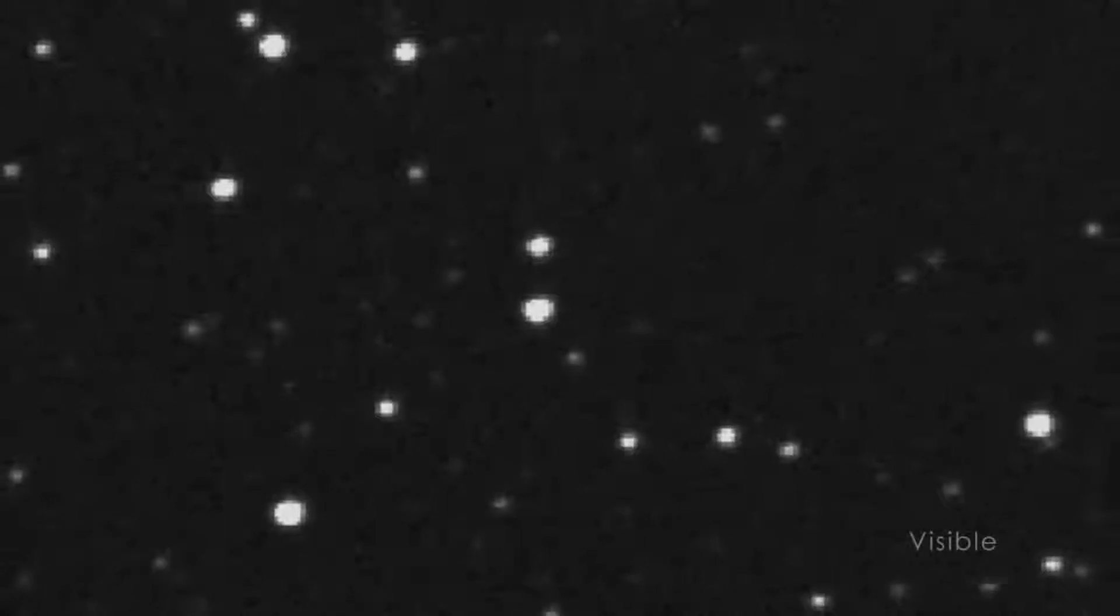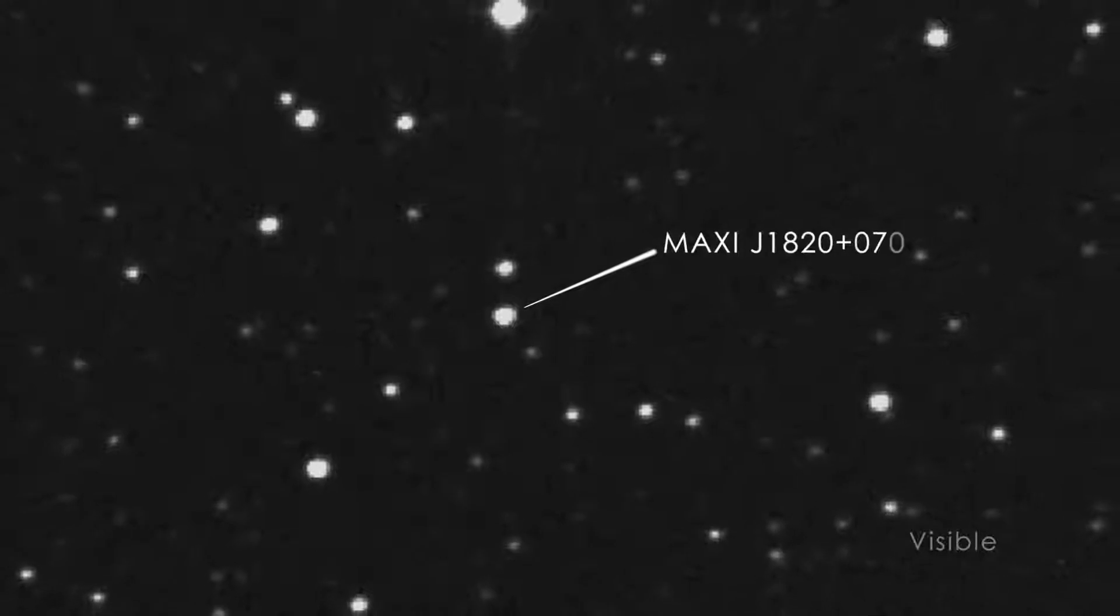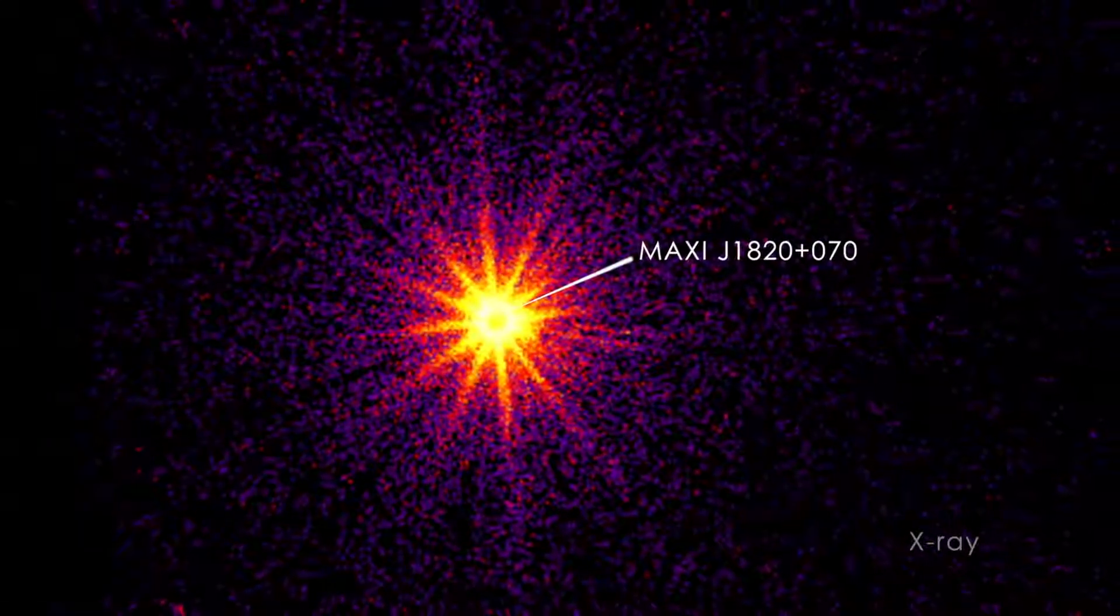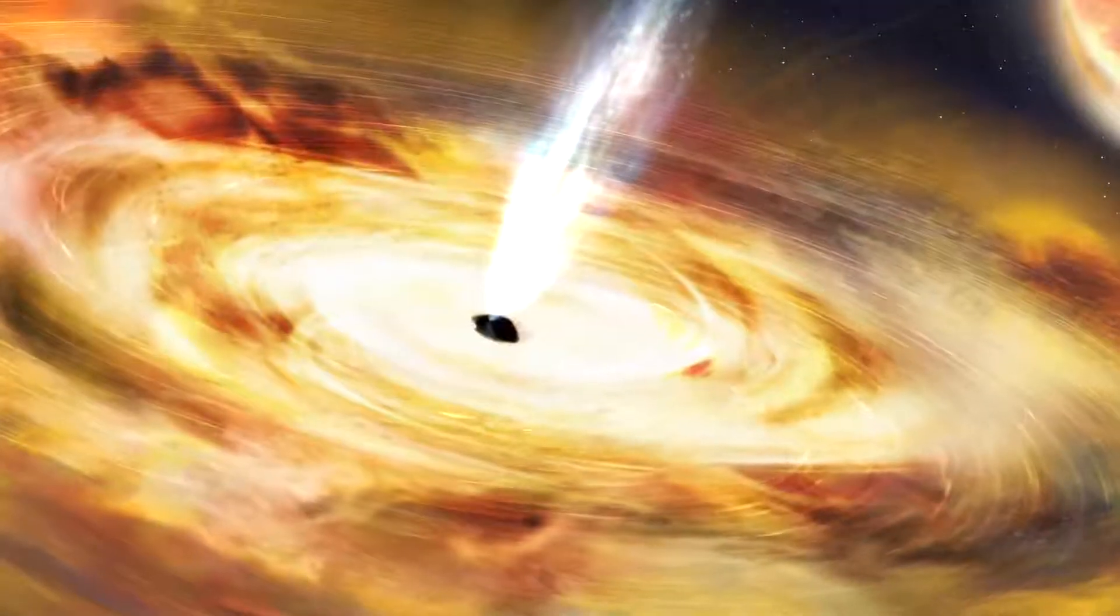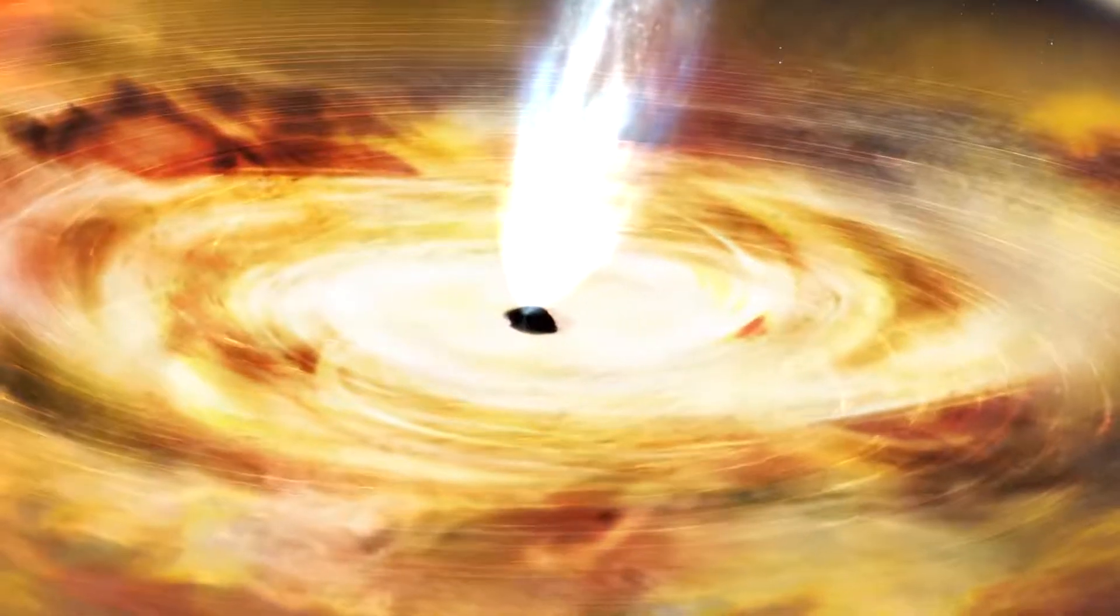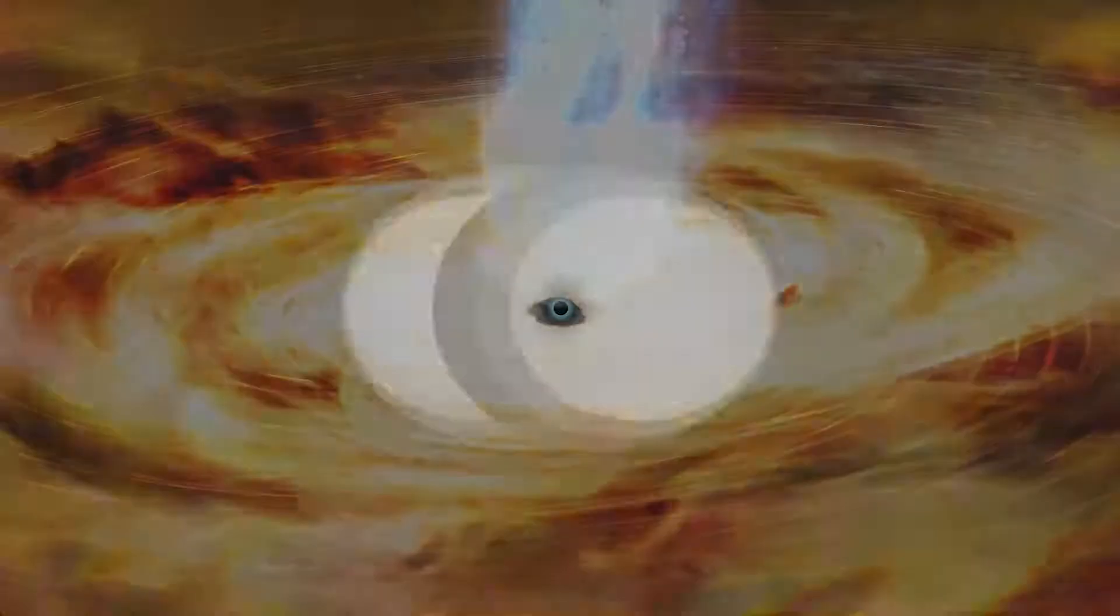NICER let us watch a flare of light from the area around a black hole called Maxi J1820 plus 070, or J1820 for short. This stellar mass black hole is around 10 times the sun's mass and funnels gas away from a neighboring star and into a dense ring of material called an accretion disk.